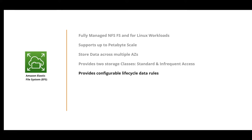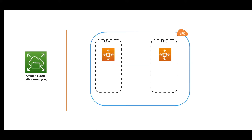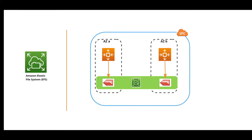File storage operates with common file-level protocols like NTFS for Windows or NFS for Linux. For example, with two EC2 instances in two different availability zones, you can have an Elastic File System working across both zones. EFS has the ability to function as a network file system where you can attach it to multiple instances at the same time.